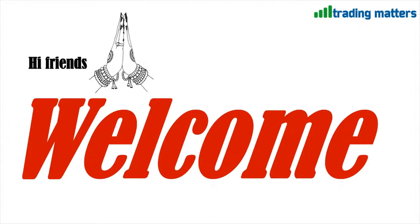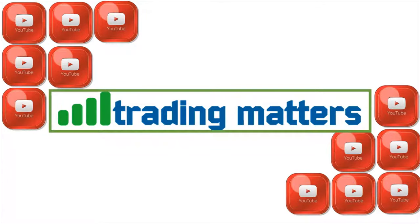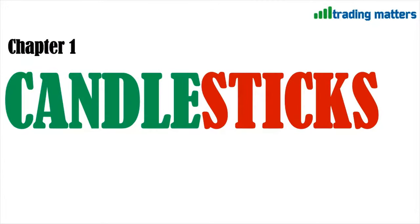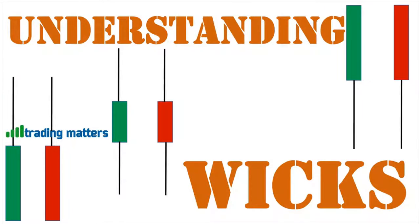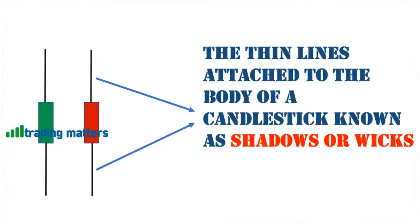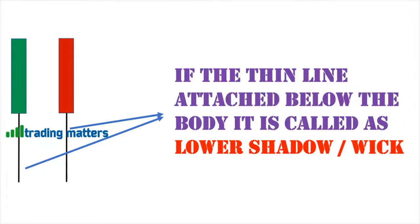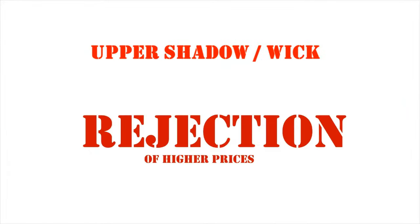Welcome to Trading Matters, technical analysis chapter 1: candlesticks. Today we are going to learn about understanding wicks. A quick recap: the thin lines attached to the body of a candlestick are known as shadows or wicks. If the thin line is attached above the body, it is called the upper wick or upper shadow. If attached below the body, it is called the lower shadow or lower wick.